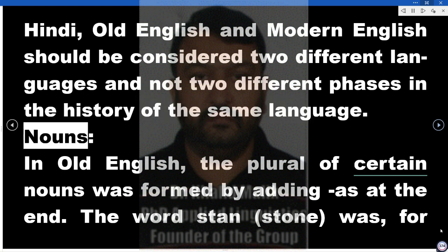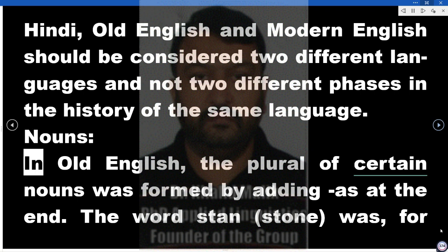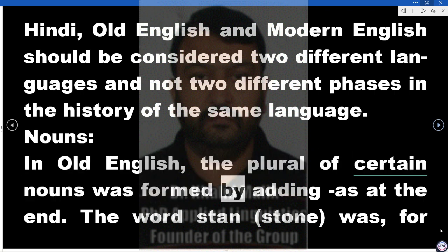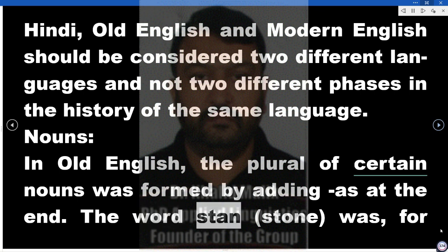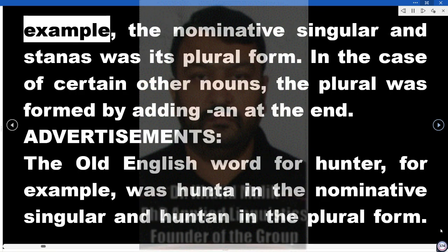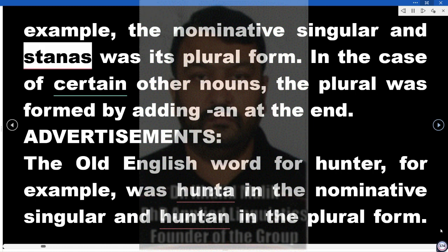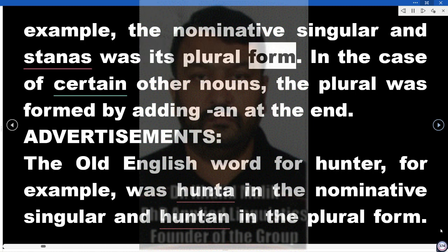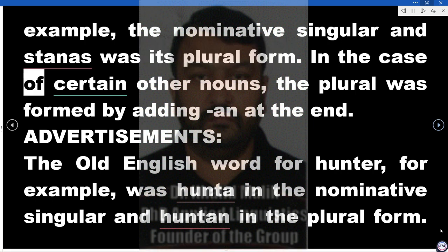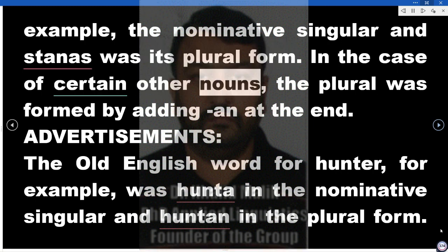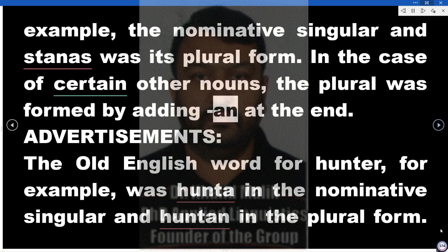Nouns. In Old English, the plural of certain nouns was formed by adding -as at the end. The word 'stan' (stone), for example, was the nominative singular and 'stanas' was its plural form. In the case of certain other nouns, the plural was formed by adding -an at the end.